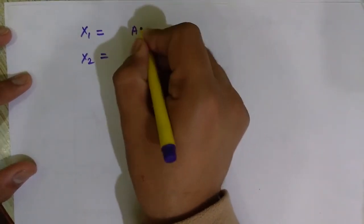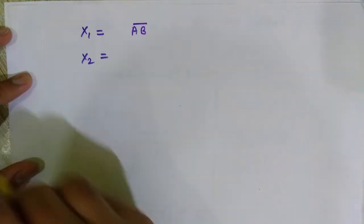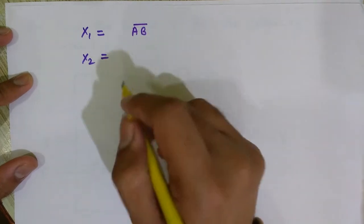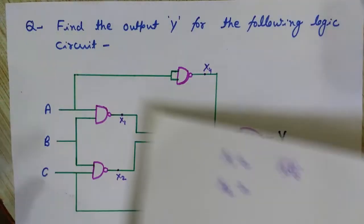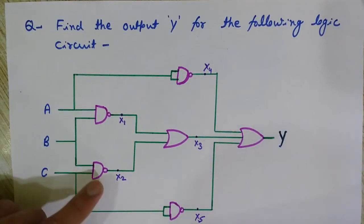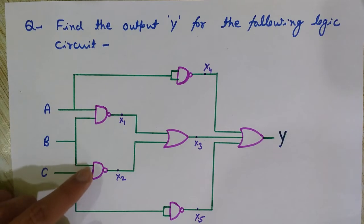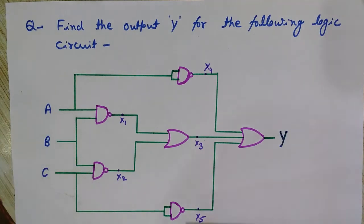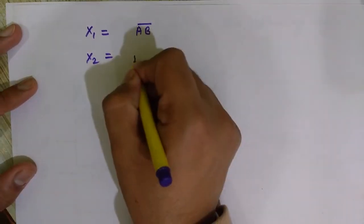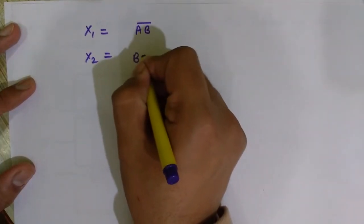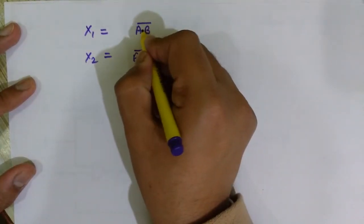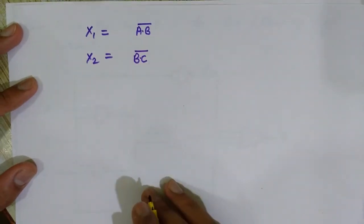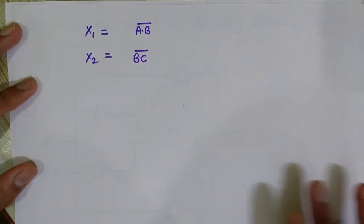So x1 is A NAND B — NAND means AND then NOT operation, so it is (A·B)̄. And x2: the first input is B and the second is C, so x2 is B NAND C, which means (B·C)̄ — we AND these two and then complement.